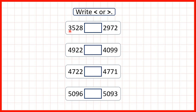So first, we have 3528, and we're comparing that to 2972. Now when we're comparing numbers, we start by comparing the larger place values first — the place values furthest to the left. Here, because this number has three thousands and this number only has two, we know straight away that this first number is the larger number.